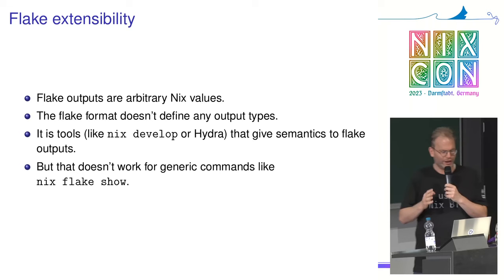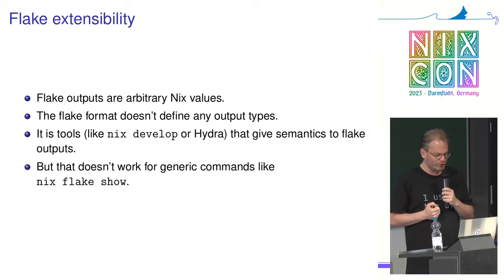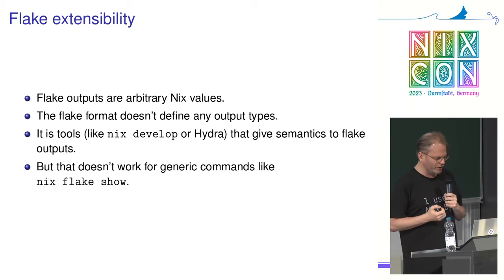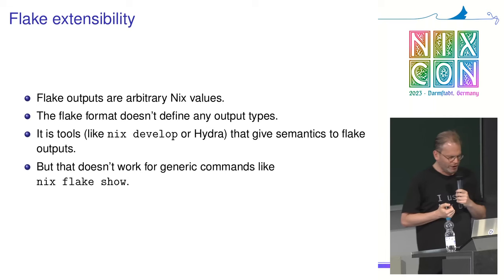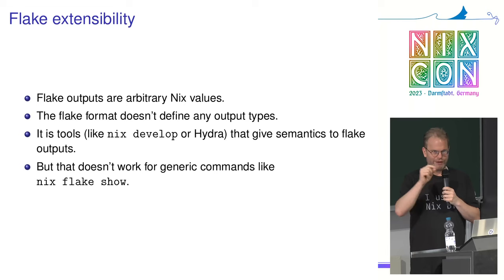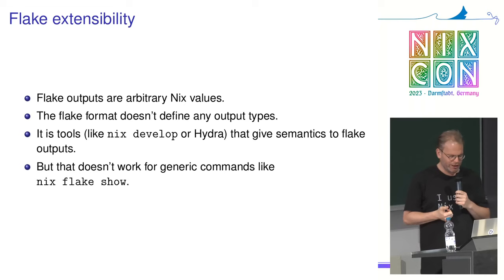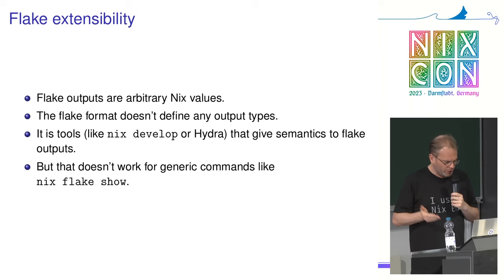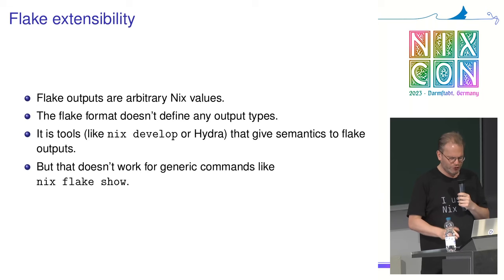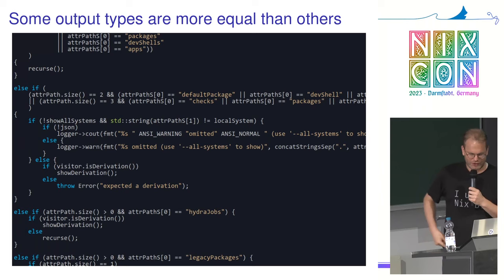On flake extensibility: the flake file format doesn't say anything about output types - they're arbitrary Nix values, so they're super extensible. If you invent something new like home manager modules or configurations, you can just add them to your flake. But the problem is the tools don't know anything about it. The semantics of flake outputs are defined by the tools that operate on them - for example, `nix develop` knows about the devShells attribute. But that doesn't work for generic commands like `nix flake show`, because those need to do something sensible for flake outputs they don't know about. The result is that some output types are more equal than others.